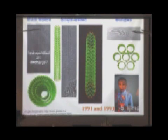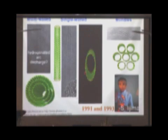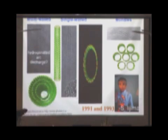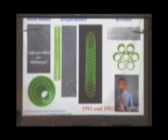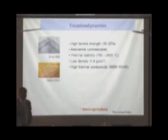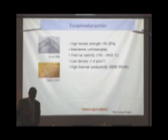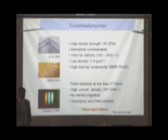1993 saw the discovery of single-wall carbon nanotubes, which are about 1 or 2 nanometers in diameter and 2 microns long. This has changed the landscape enormously in the last decade. It has exceptional properties — be it mechanical properties, be it electrical properties. And now, also in medicine and nano-agriculture, there are applications.